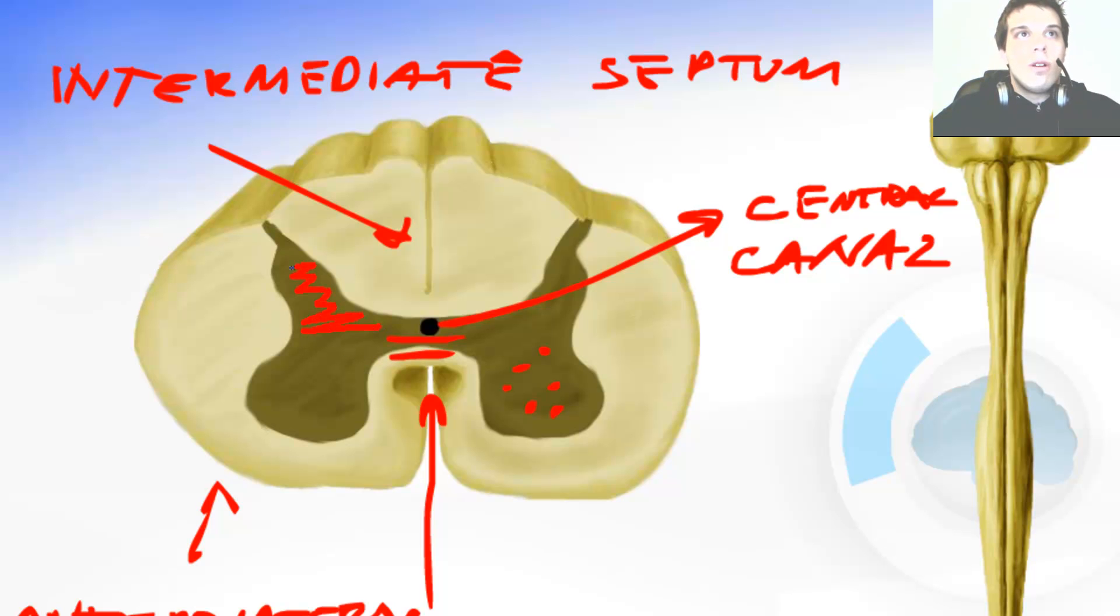This part over here of the spinal cord is the posterior horn of the gray matter. It is the sensible horn. It is called the sensible horn because the posterior sensible roots of the spinal nerve come to the spinal cord through this horn.